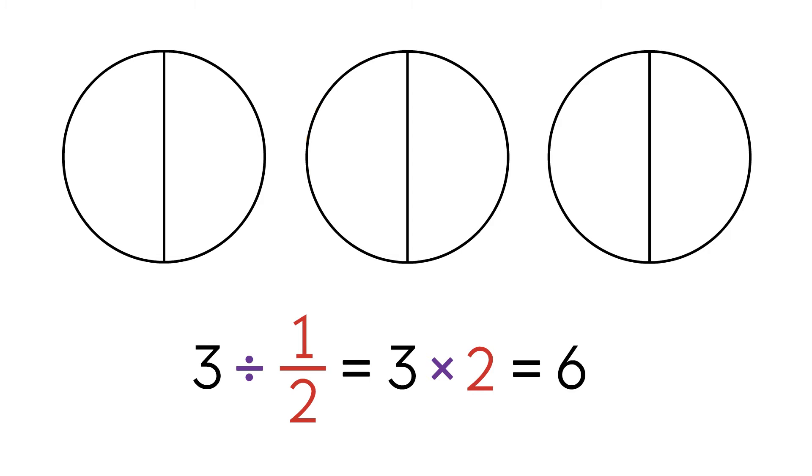So 3 divided by 1 half is the same as 3 times 2, which gives us 6.